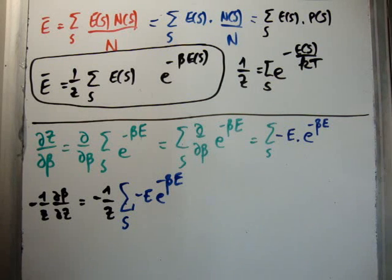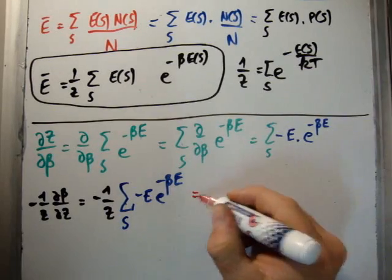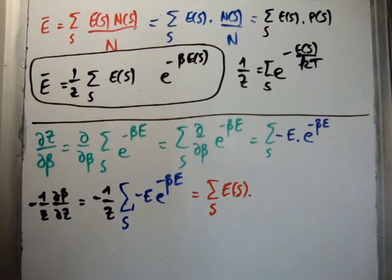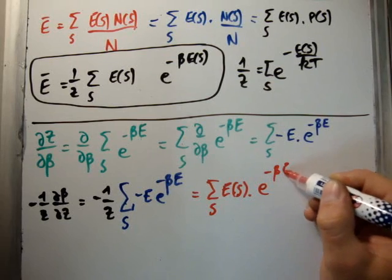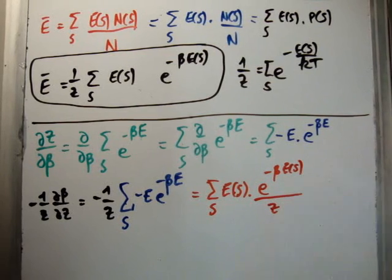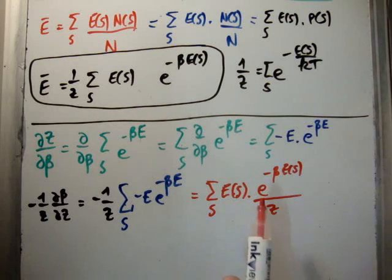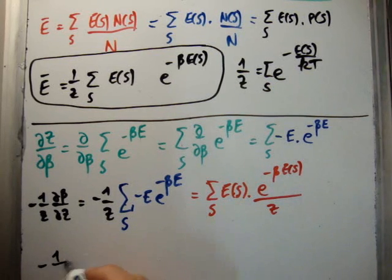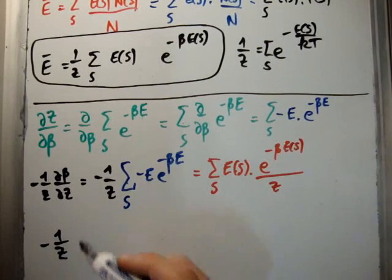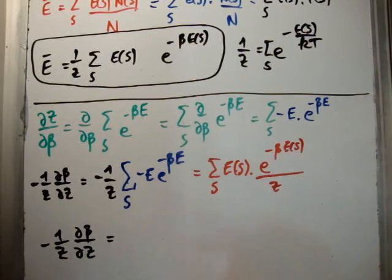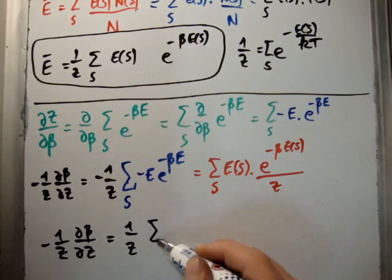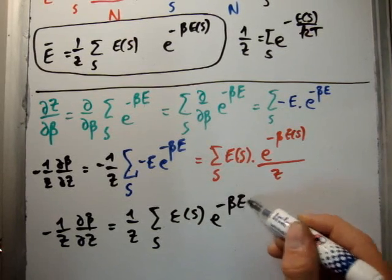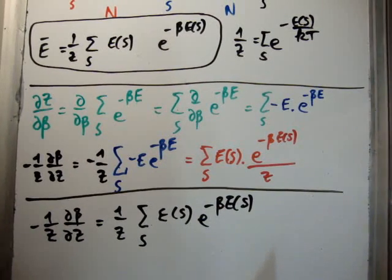So clearly the negative signs here are going to cancel out. And what we're going to be left with is the sum over s, the energy—we'll say I'm going to put in the placeholder this time—we're going to have E to the minus beta E of s divided by z. And look what we have here. It's pretty much the same thing. It is, in fact, the same thing. So I'm just going to rewrite it: that minus 1 over z del beta del z is equal to 1 over z sum over s E of s e to the minus beta E of s.